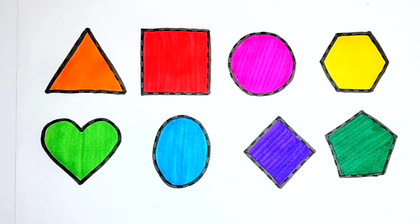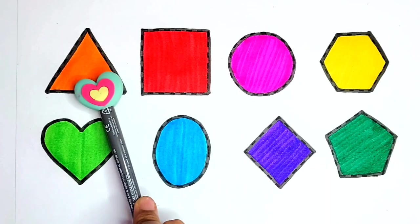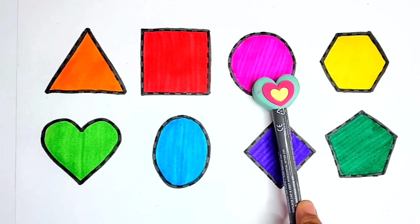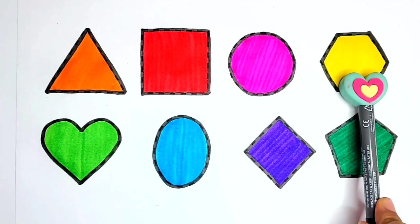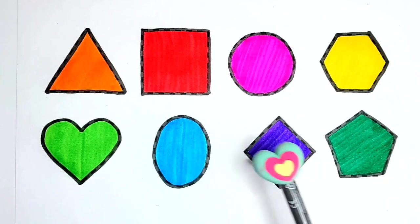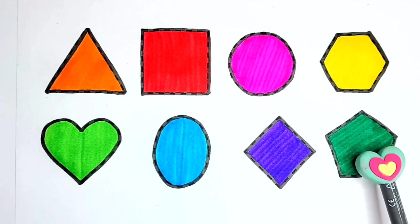Let's revise. Triangle. Circle. Hexagon. Heart. Oval. Diamond. Pentagon.